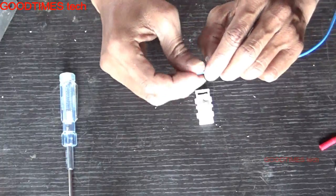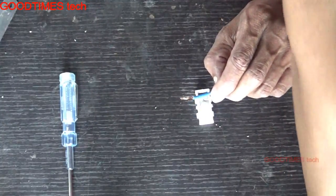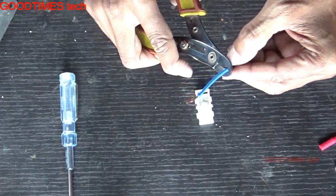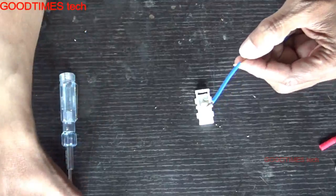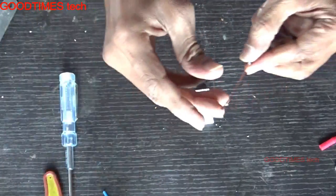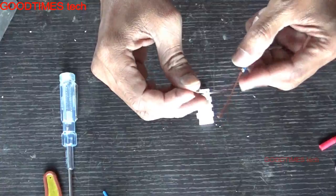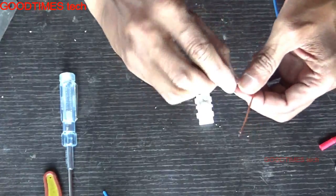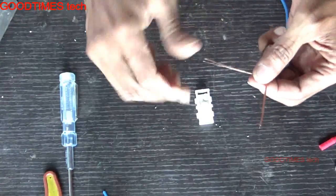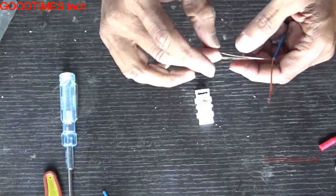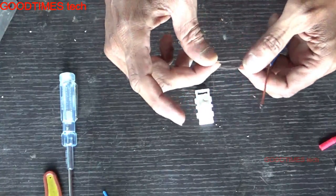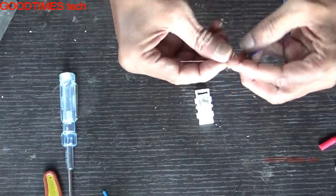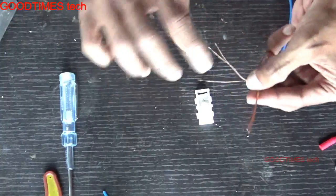For repairing it, first of all we need a copper wire. So peel the copper wire. Take two or three strands. If you take more again it will be very thick. Twist them in this way here.